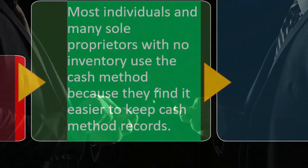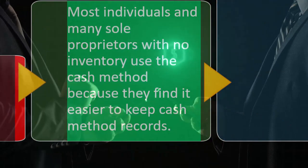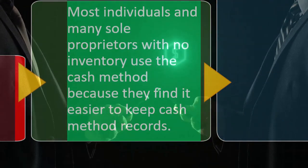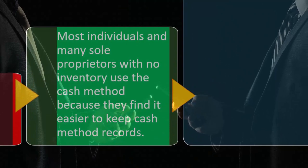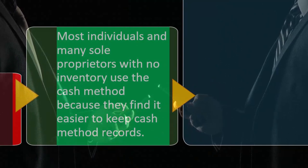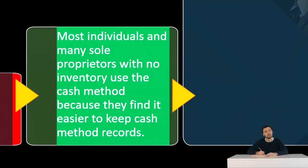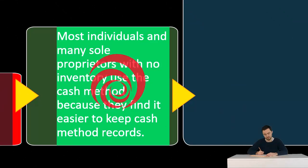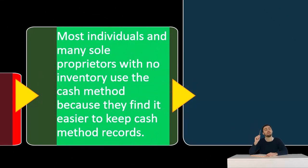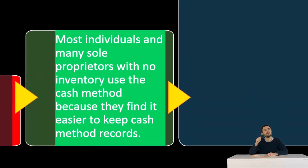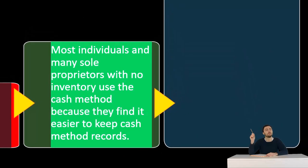Oftentimes it's only when there's a difference between the time of purchase versus time of use. For example, if you bought those supplies and didn't consume them until sometime in the future, then when you buy the supplies you should put them on the books as an asset, and when you consume them, that's when you would expense them on an accrual-based system.